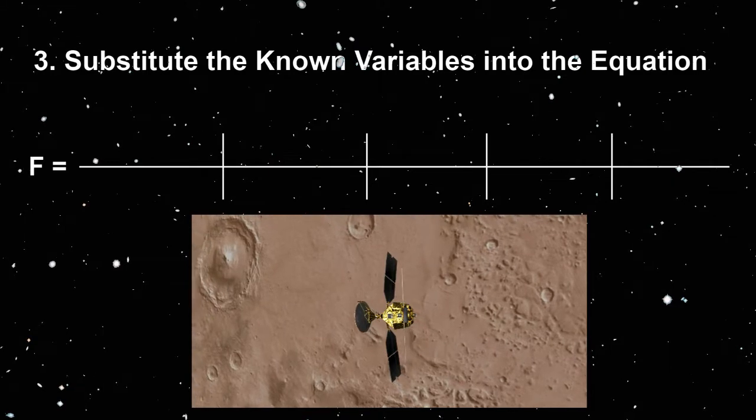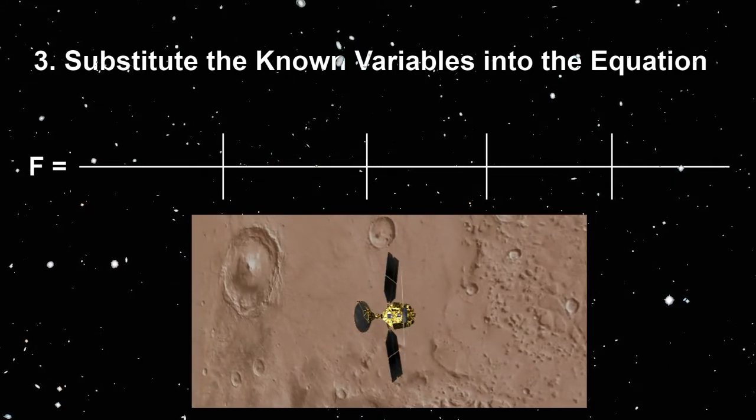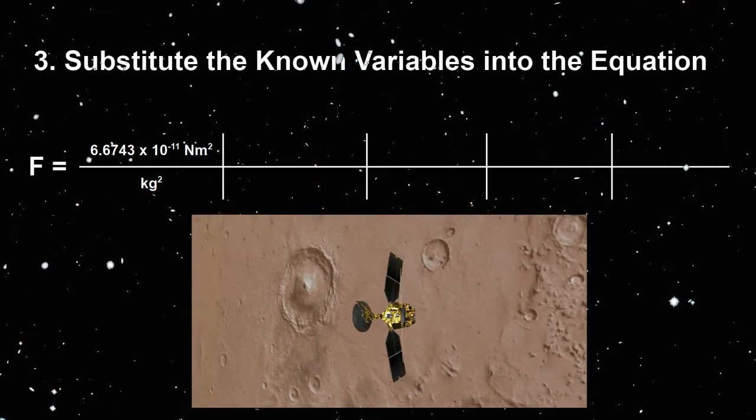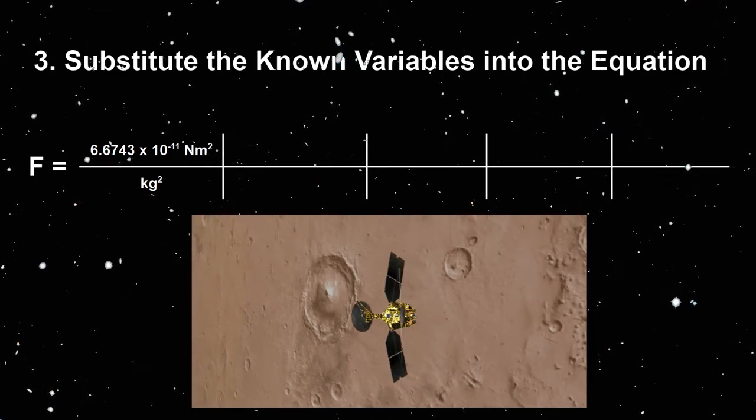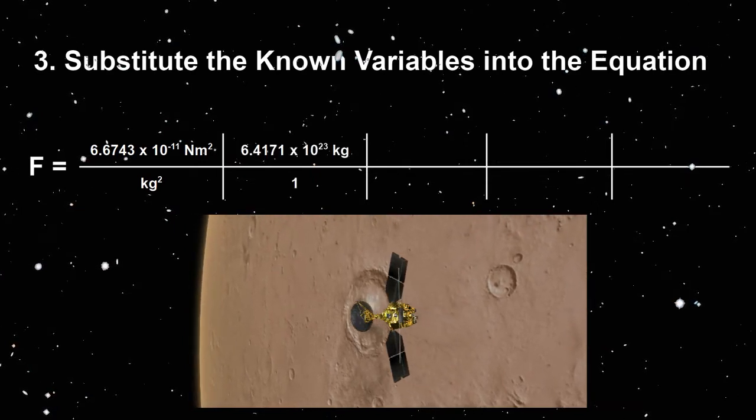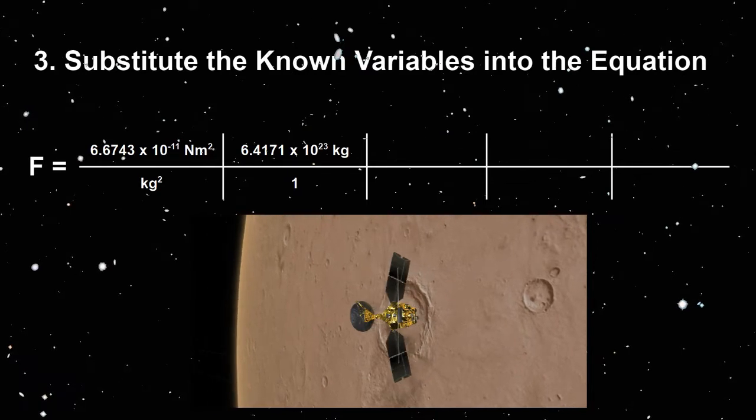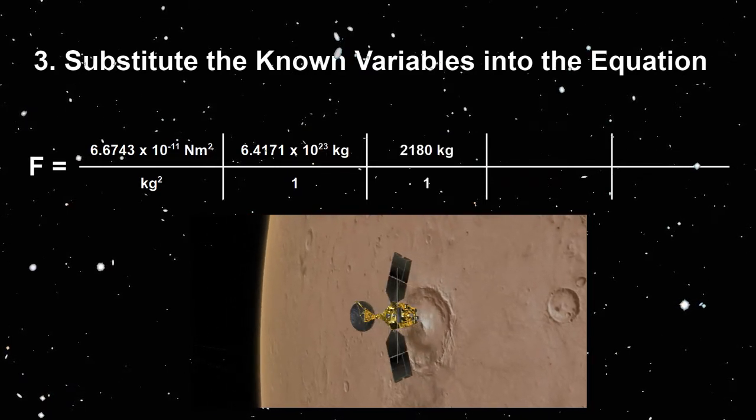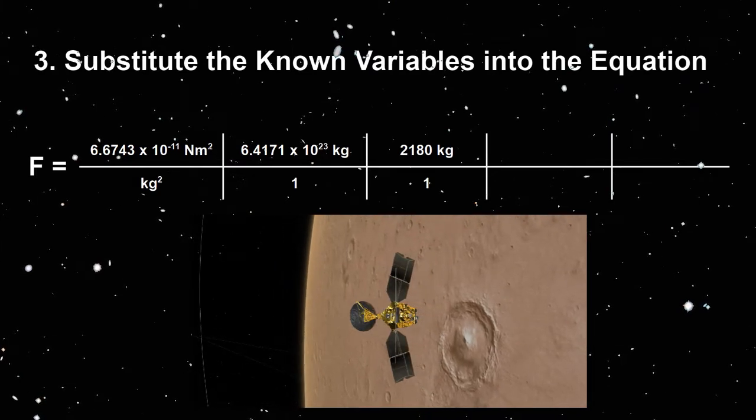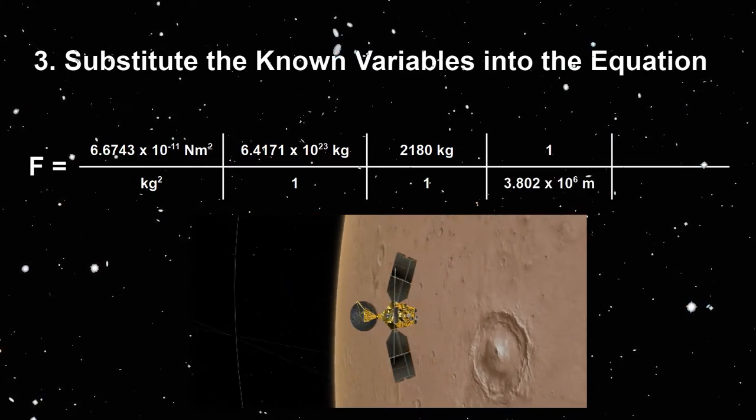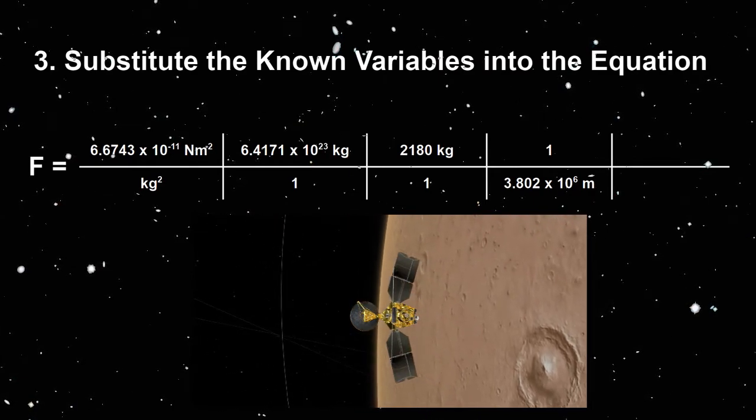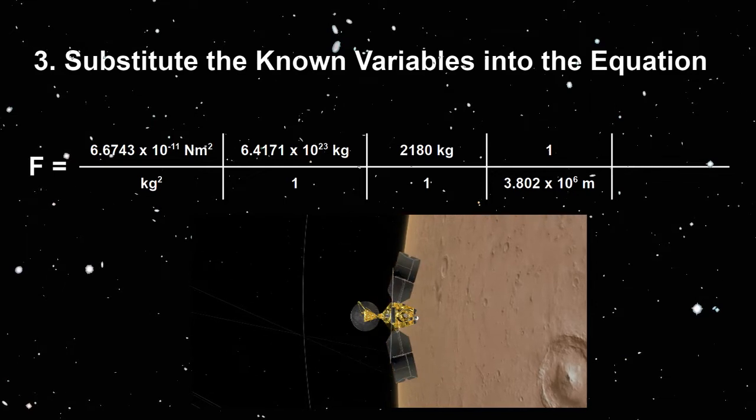The next step is to substitute the known variables into the equation. 6.6743 times 10 to the negative 11 newton meters squared over kilogram squared times the mass of Mars, 6.4 times 10 to the 23 kilograms times the mass of MRO, 2,180 kilograms, divided by 3.802 times 10 to the 6 meters, the distance between the center of Mars and the center of the MRO, and finally dividing by 3.802 times 10 to the 6 meters a second time.